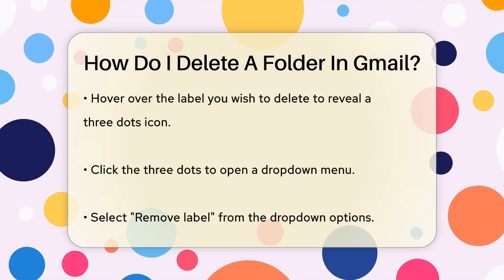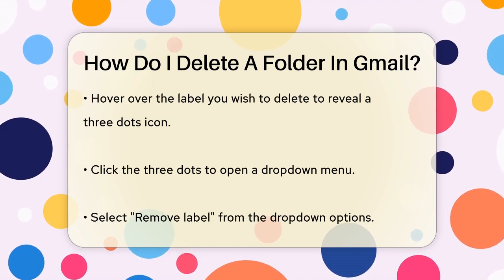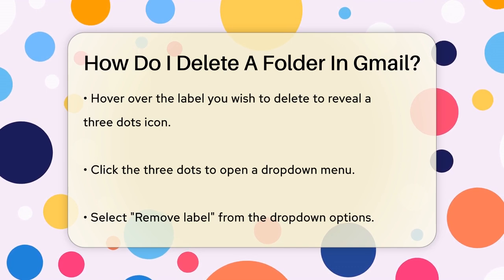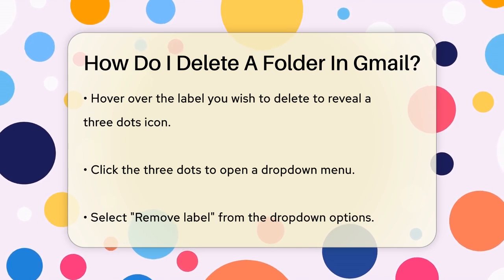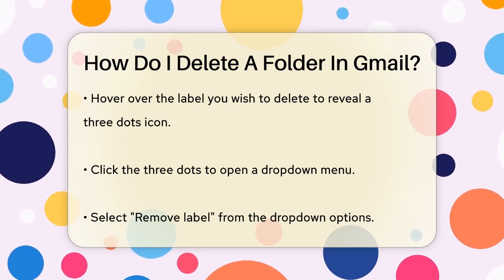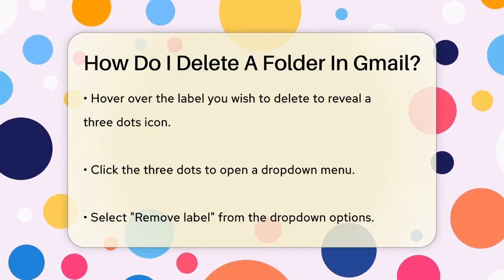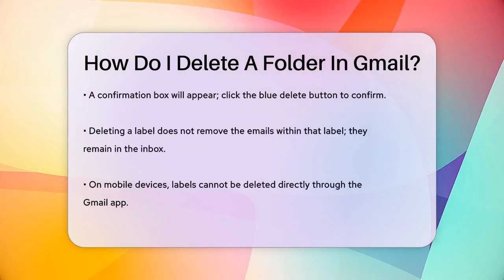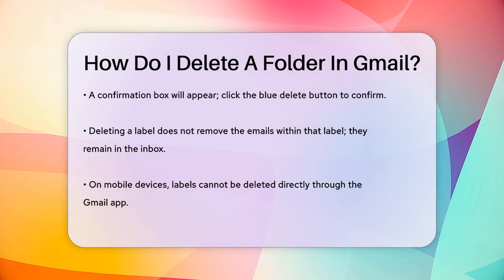When you click on Remove Label, a box will pop up asking you to confirm that you want to remove the label. If you're sure, click on the large blue Delete button. Here's a key point: deleting a folder or label in Gmail does not delete the emails that are stored in that folder — those emails will still be kept in your inbox.